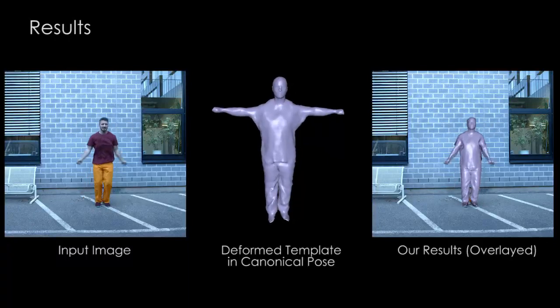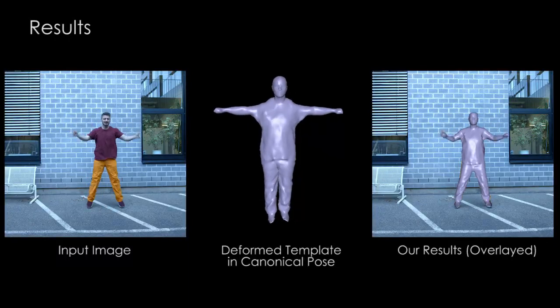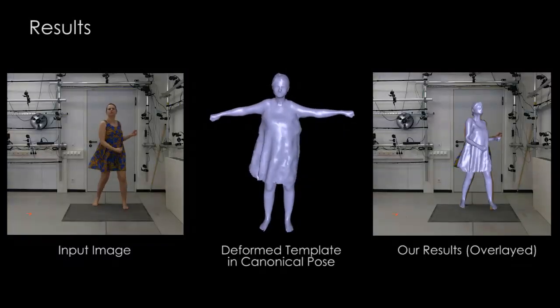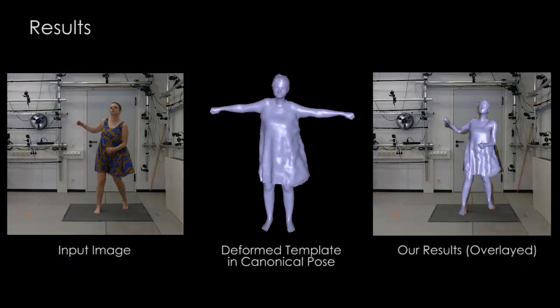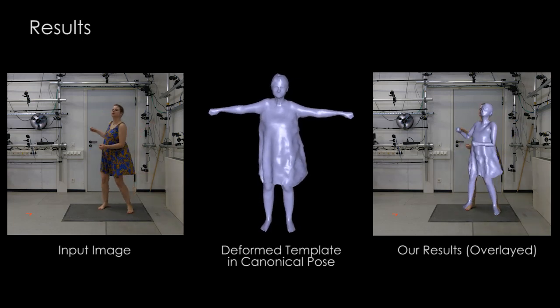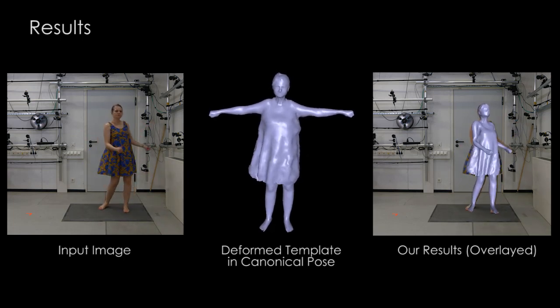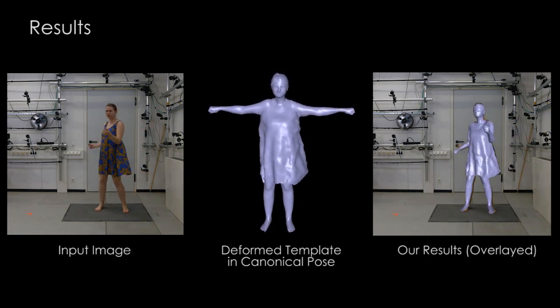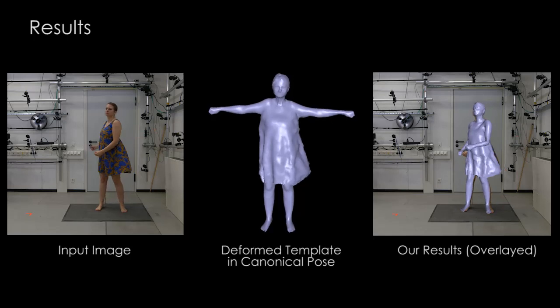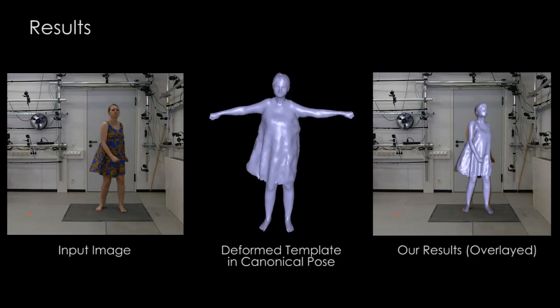In the middle, we show the output of our DefNet, which is the non-rigid surface deformation in the canonical pose. We can see that DefNet not only captures the non-rigid deformation of the surface, but also corrects the error in the skeletal pose.